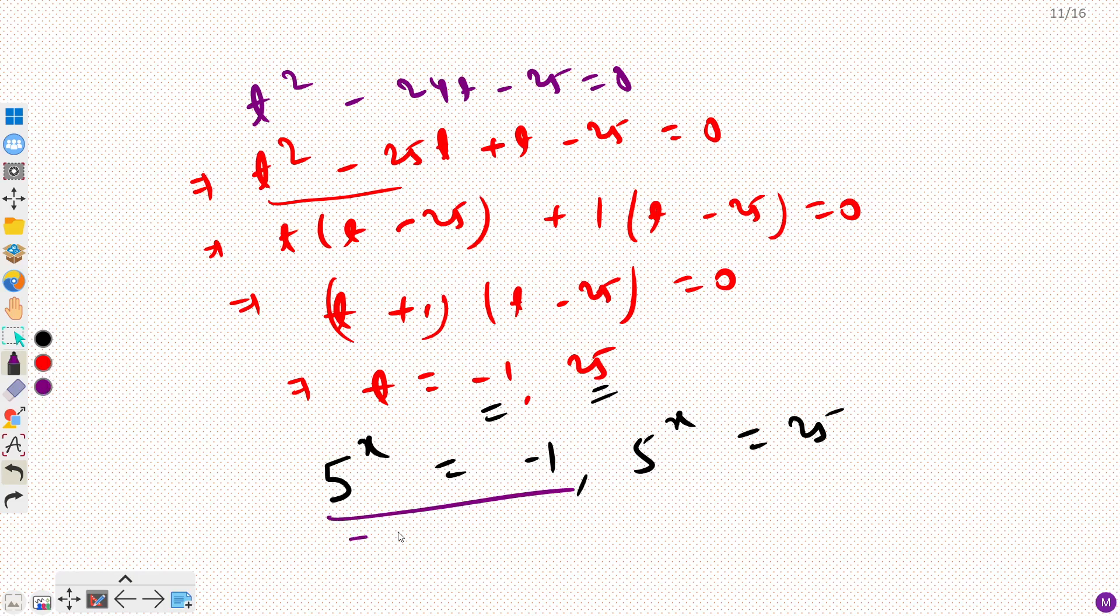Now this is not possible, right? If you graph any a raised power x, this would always be above the x-axis. So there is no possible value of x for which I am going to get a negative number. So 5 raised power x can never be negative. So it means that this is rejected; I am not going to get any solution from this.